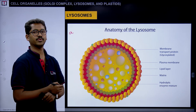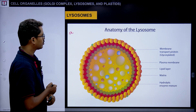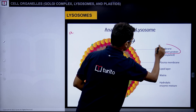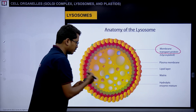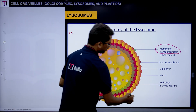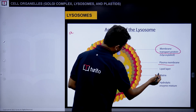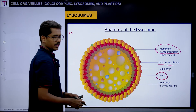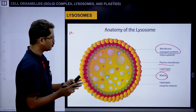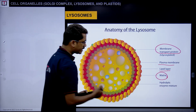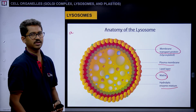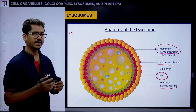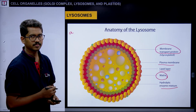This is the structure of the lysosome. It has a single membrane covering it, much like the plasma membrane, with a lipid layer. Inside is a matrix — a liquid-like substance in which different types of hydrolytic enzyme mixtures are suspended. This simple structure is what actually acts as the suicidal bag of the cell.